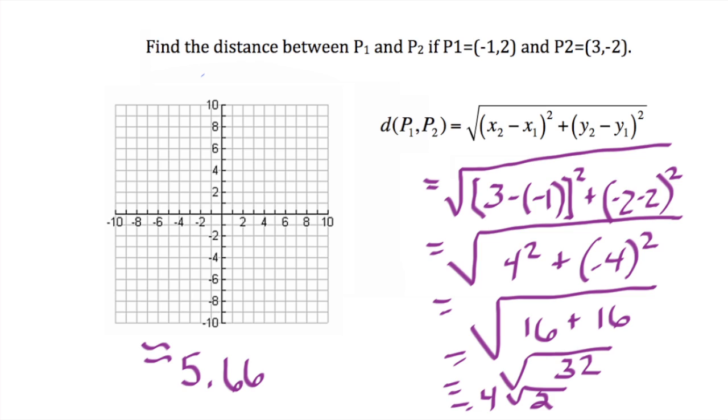The distance formula is really a simple consequence of the Pythagorean theorem, as we can see if we graph out the points. When we graph our first point, we see p1 equals (-1, 2). The point would be right there.